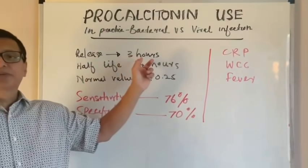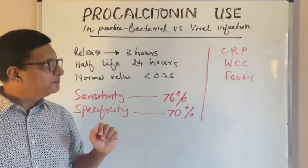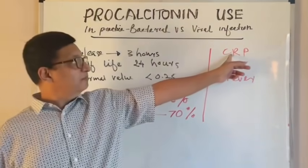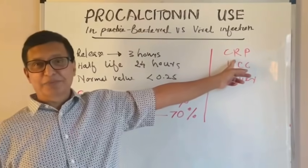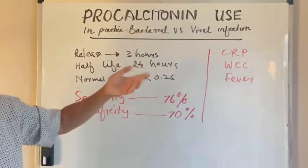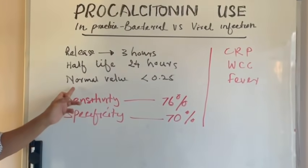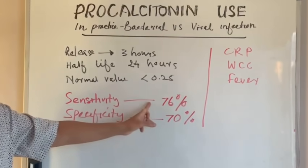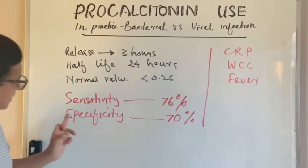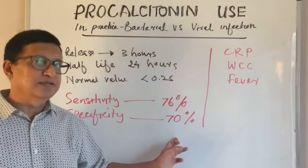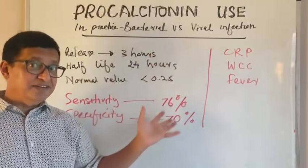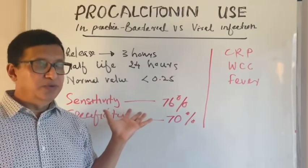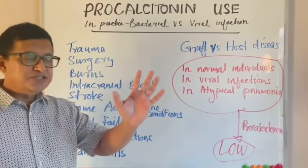Procalcitonin is released within three hours of infection and its half-life is 24 hours, whereas CRP lags behind, taking about one day to be released. The normal value is 0.25 ng/mL. Its sensitivity for bacterial infection is 76% and specificity is 70%, meaning there are other reasons for raised procalcitonin in the blood.